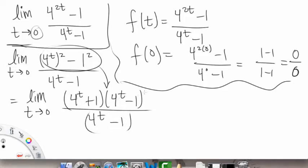So see how now we can cancel both on top and bottom, the 4 to the t minus 1, and we're left with 4 to the t plus 1, which is definitely continuous at t equals 0. So at this point we can rewrite it as limit as t goes to 0 of 4 to the t plus 1.